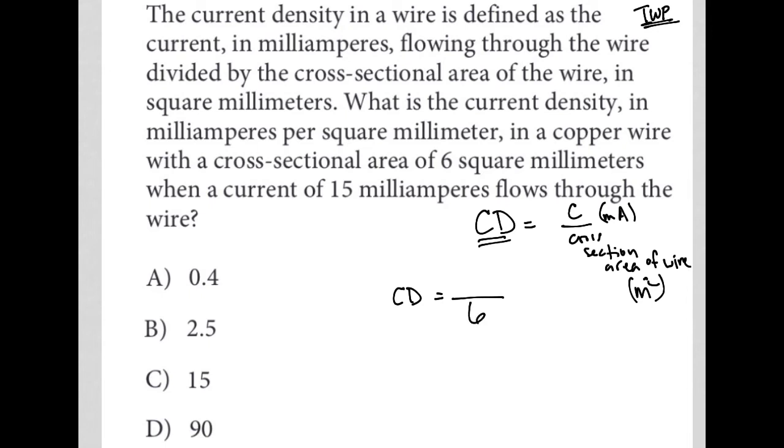So, the units are going to work out fine, so I don't have to worry about that. When a current of 15 milliamperes flows through the wire, so the numerator is 15. So, they gave it to us in a reverse order, but that's why we wrote it down, right? I know current is in the numerator, so that's the 15. I know the cross-sectional area of the wire is the denominator, so that's six.